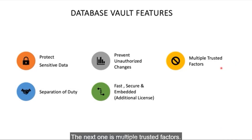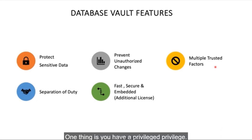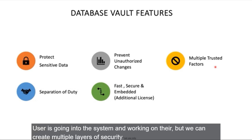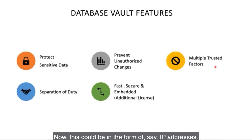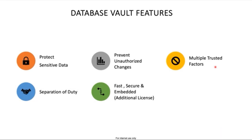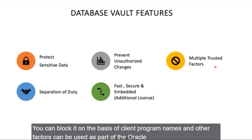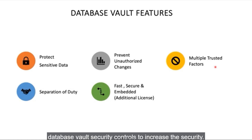The next feature is multiple trusted factors. You can now put multiple trusted factors to authorize access. These could be in the form of IP addresses — blocking addresses outside your organization's IP pool — or based on usernames or client program names. These factors can be used as part of Oracle Database Vault security controls to increase security.